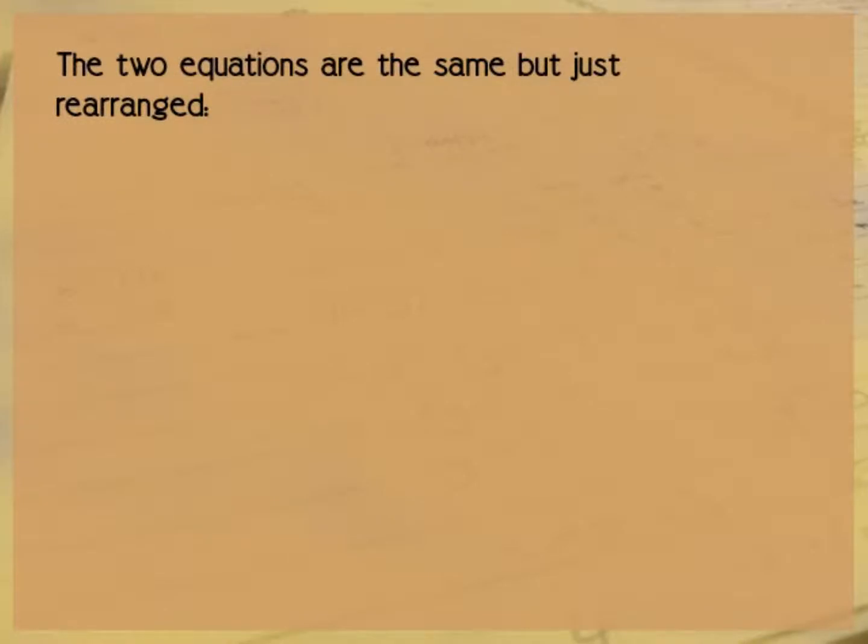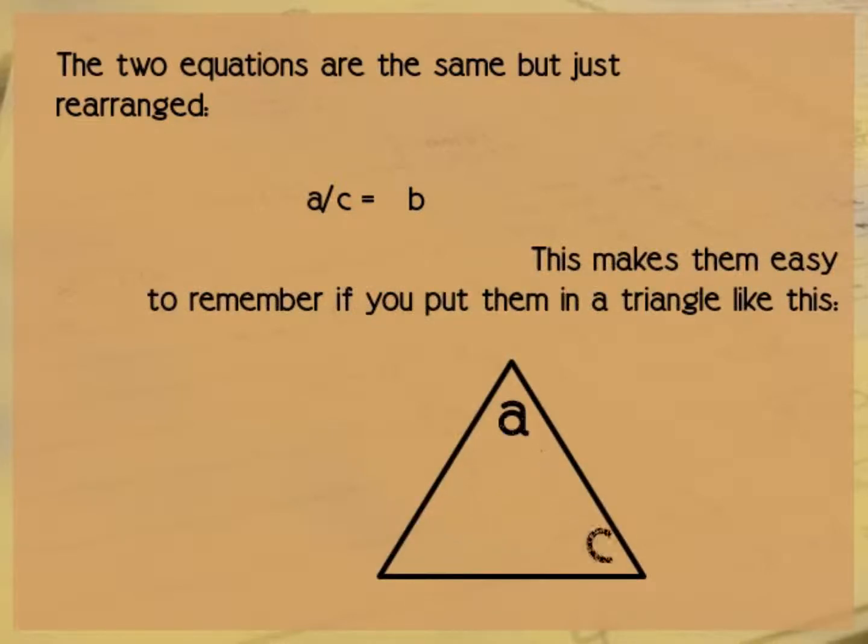So if we look, the two equations are the same, but just rearranged. Let's start with our first equation, A equals BC. And if we can either divide both sides by C, or we can do our little change side, change sign trick. And we end up with the second equation, A divided by C equals B. And this means that you can remember these equations very easily if you put them in a triangle like this.